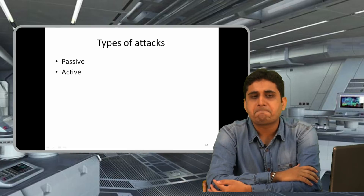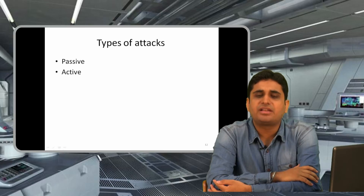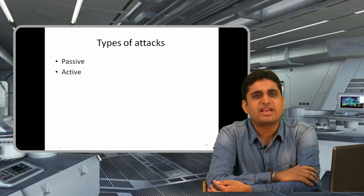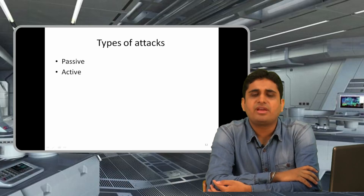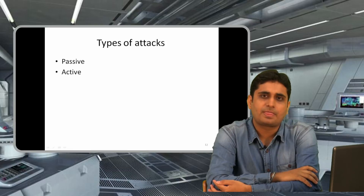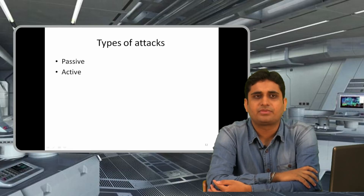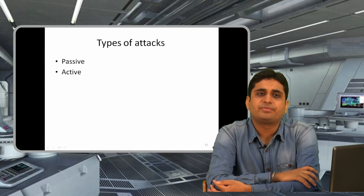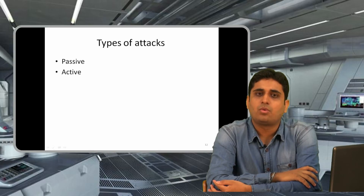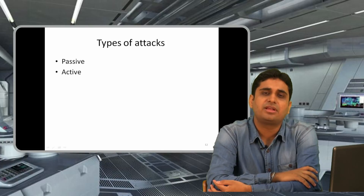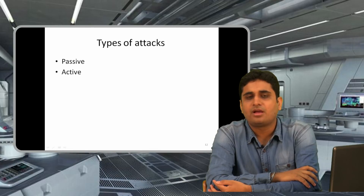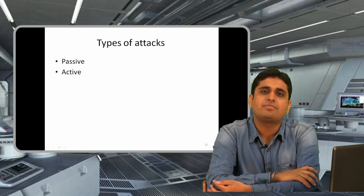The other type is an active attack. In active attacks, an attacker wishes to change the information. For instance, if I have my own website or blog, an attacker might want to change the information on it — that is an active attack. In network-based active attacks, an attacker can change the message one person sends to another. For example, if person A is sending a message to person B, the attacker might change A's message and send a fake or modified message to B.